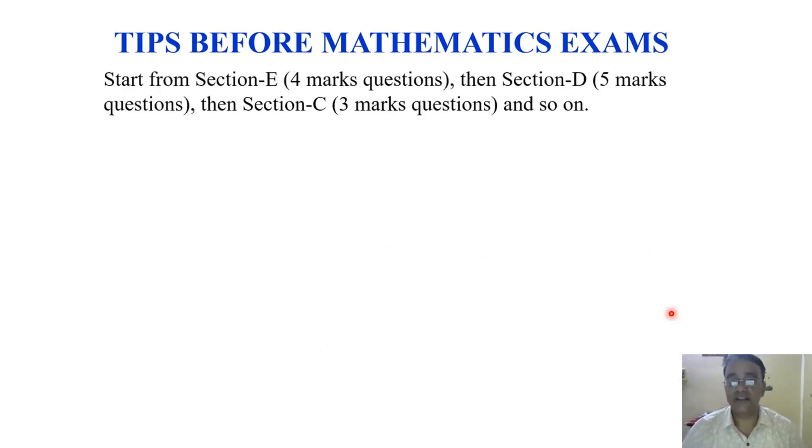Now one should start from section E, that is four marks question, then section D, section C, section B, section A last. Or you can follow first five marks question, then four, then three, then two, then one.